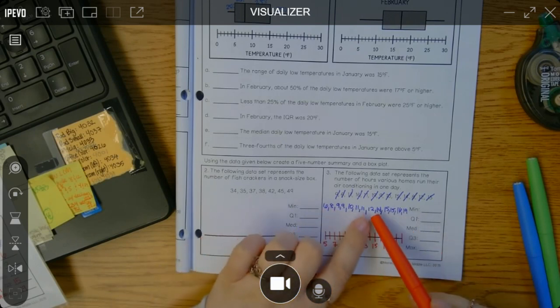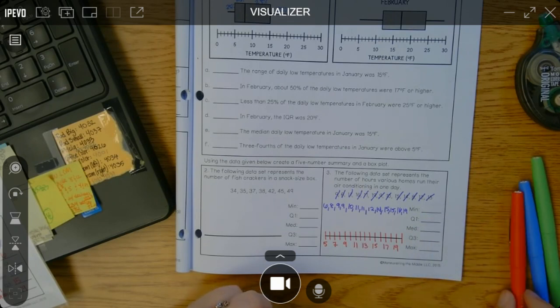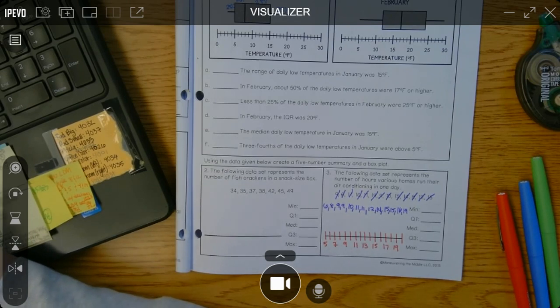Okay. And then you're going to go ahead and cross off to find the median, plot it, cross off to find the lower quartile, plot it, cross off to find the upper quartile, plot it, and then also plot your minimum and maximum. All right. You got this, my little mathematicians. You're going to do great.